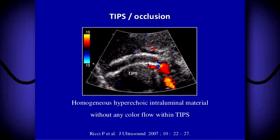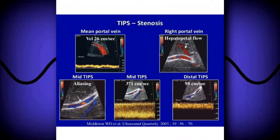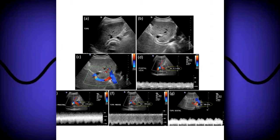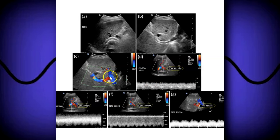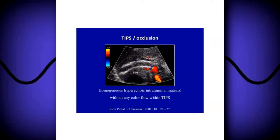Here is a case of TIPS stenosis: the portal vein velocity is 26 cm/s and right portal vein flow is going toward the liver instead of toward the TIPS catheter. Here is a normal TIPS at the portal hepatis showing flow going hepatopetal through the main portal vein toward the IVC, with velocities within normal limits. Here we see a complete TIPS occlusion — hypoechoic material representing thrombus is visible. That sums up today's video on portal vein Doppler ultrasound. Please leave any questions in the comments. Thank you.